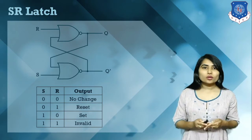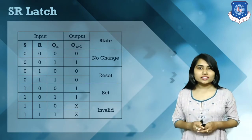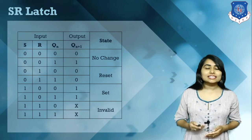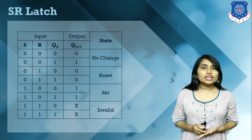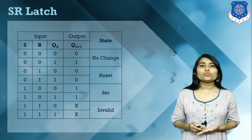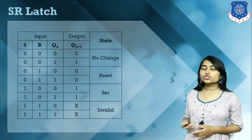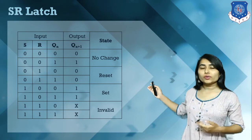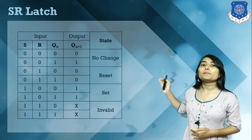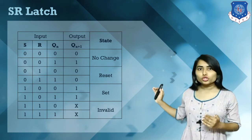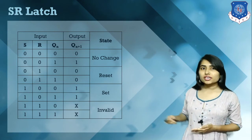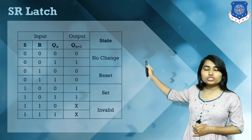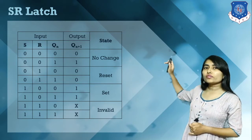Now let's discuss the truth table of the SR latch. In this SR latch we have three inputs: S, R, and past output Qn. Since we have three inputs, we have a total of eight possible combinations. Whenever S and R equal 0,0, whatever the value of Qn is forwarded to Qn+1.